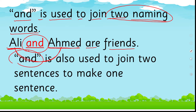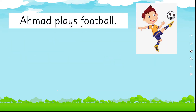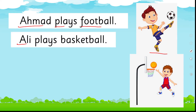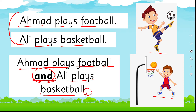The second use of 'and' is to join two sentences to make one sentence. For example: 'Ahmad plays football' and 'Ali plays basketball.' If I want to join these two sentences, I remove the full stop after the first sentence, write 'and,' and then continue: 'Ahmad plays football and Ali plays basketball.' Now these two sentences are joined together with 'and' and it becomes one sentence. So we have learned two uses of 'and' — between naming words, and between two sentences to make them one.